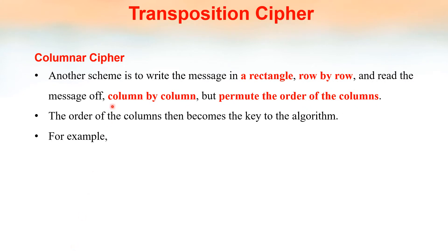The second type of transposition cipher is a columnar cipher. In this, the message is written as a rectangle row by row, and the cipher text is read off column by column, permuting the order of the columns.